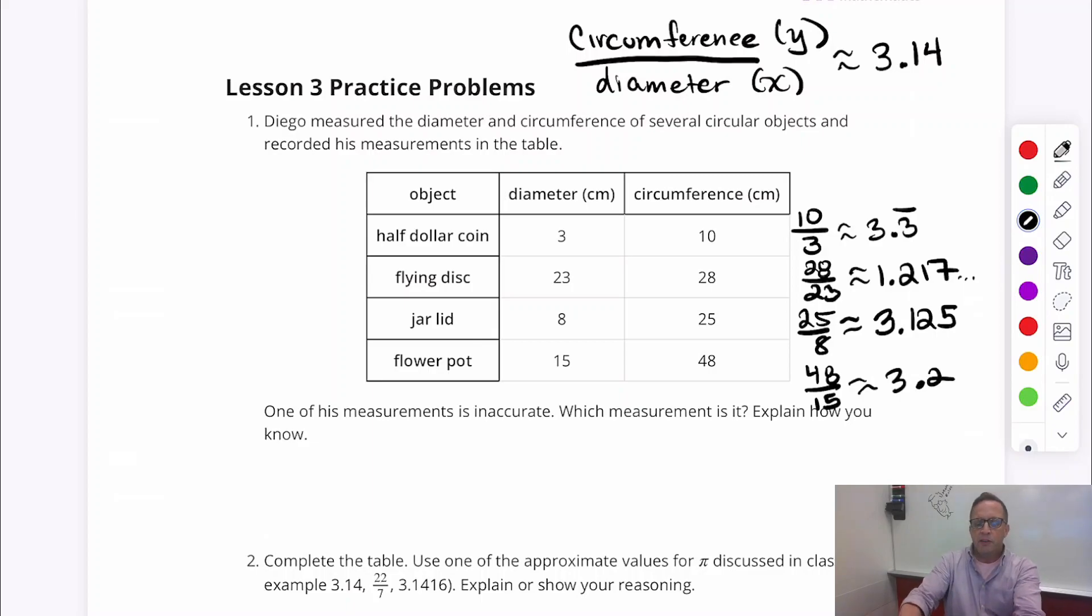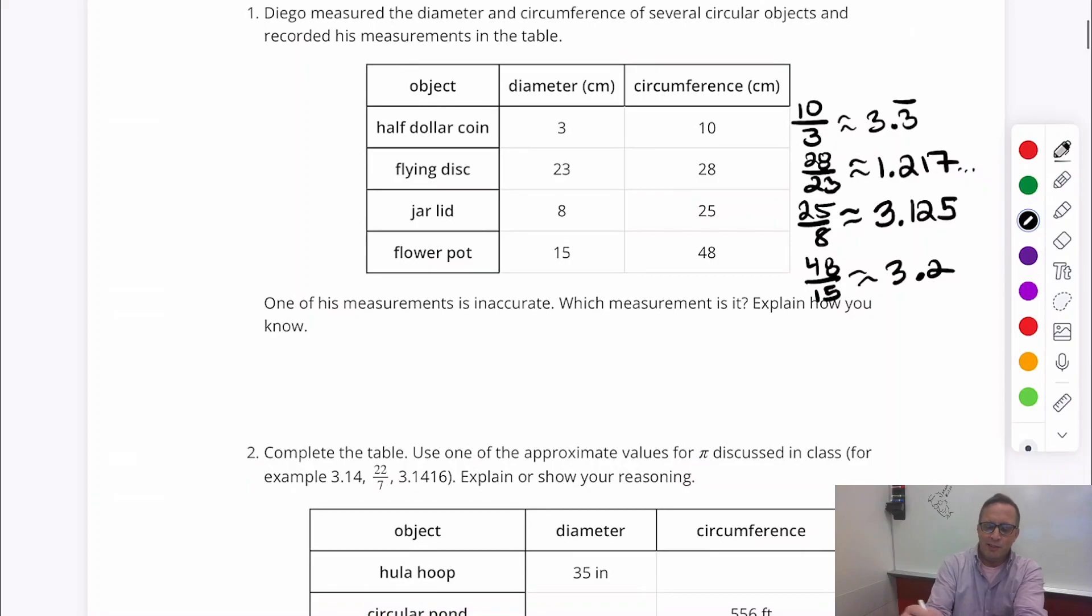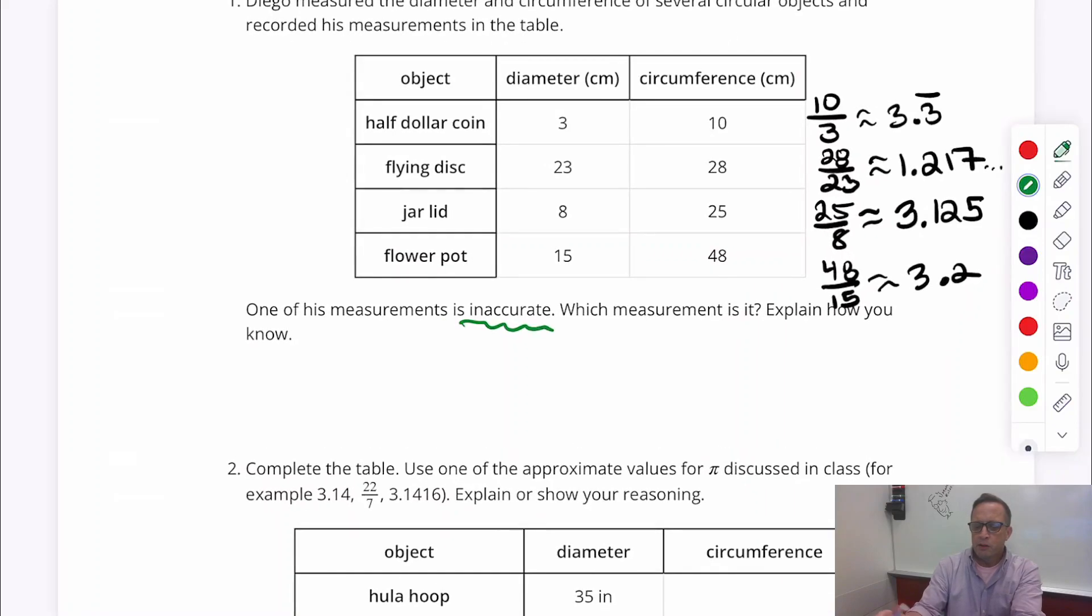And then we're going to do 48 divided by 15. So 48 divided by 15. I got 3.2 exactly. Alright. So now the question here is, one of his measurements is inaccurate. Which measurement is it? Explain how you know. So there's one of them that kind of sticks out like a sore thumb. This one is unlike the others. All the other ones are 3 something. 3.3, 3.1, 3.2. All are pretty close to pi, 3.14.